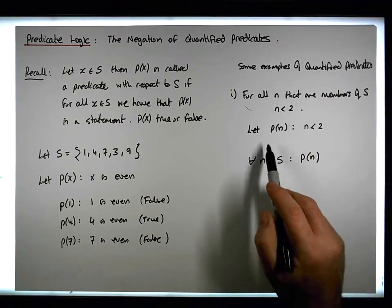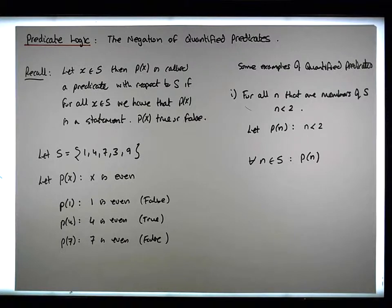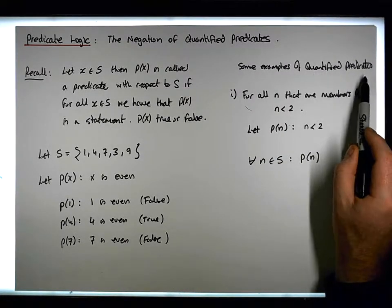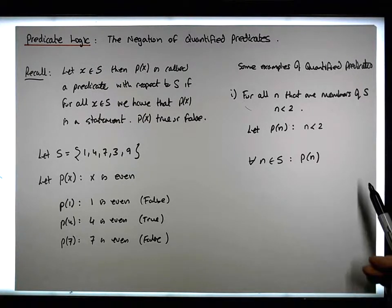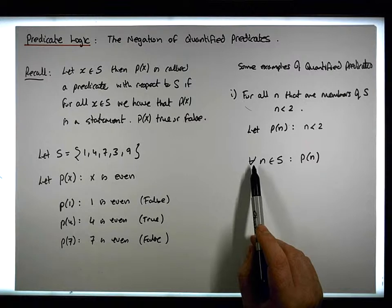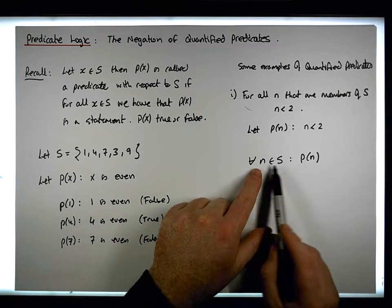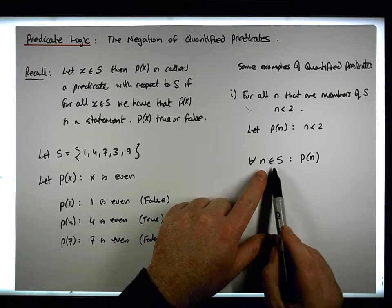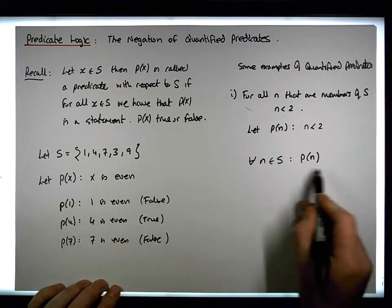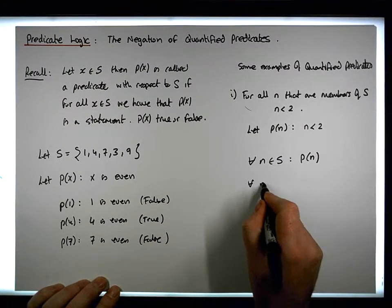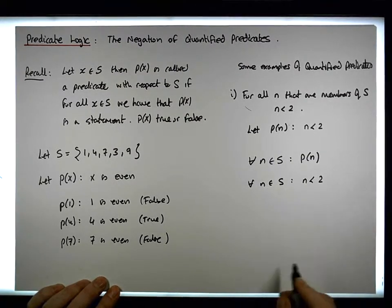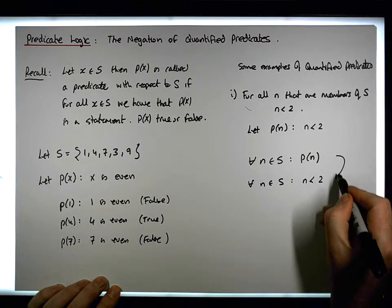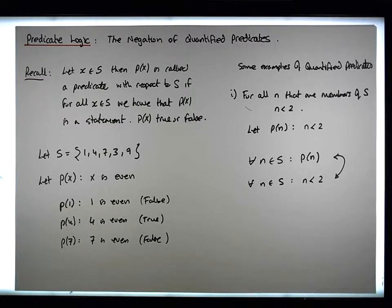P of n is a statement that's either true or false. A quantified predicate is also either true or false because it's talking about something associated with this particular set s. Another way to write this would be: for each and every n that's an element of s, we have that n is less than 2, because that's what P of n represents.